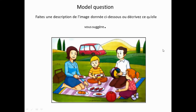Remember these important verbs in third person singular and plural: 'porter' (to wear/carry), 'tenir' (to hold — 'il tient'), 's'asseoir' (to be seated — 'il est assis'), and 'être debout' (to be standing). To summarize: describe what the picture shows, where it takes place, the background, the people and place in detail, and their activities. Use lots of adjectives, key phrases, and the present tense — then check and recheck. Here is a model question: 'Faites une description de l'image donnée ci-dessous ou décrivez ce qu'elle vous suggère.' Observe the picture carefully and write a 200-word composition — post it in the comments!